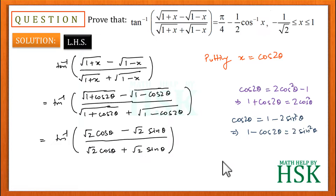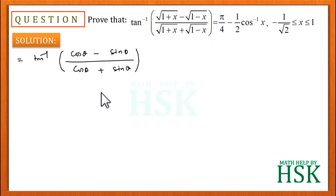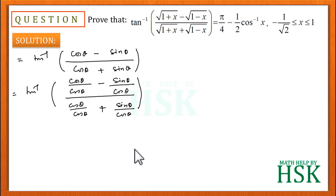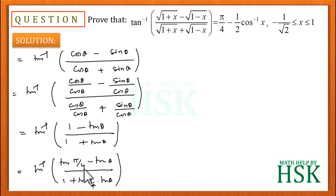Root 2 can be taken common and cancelled, so I get tan inverse of cos theta minus sine theta upon cos theta plus sine theta. Dividing both numerator and denominator by cos theta, this becomes tan inverse of 1 minus tan theta upon 1 plus tan theta. I write 1 as tan pi by 4, since tan pi by 4 equals 1.